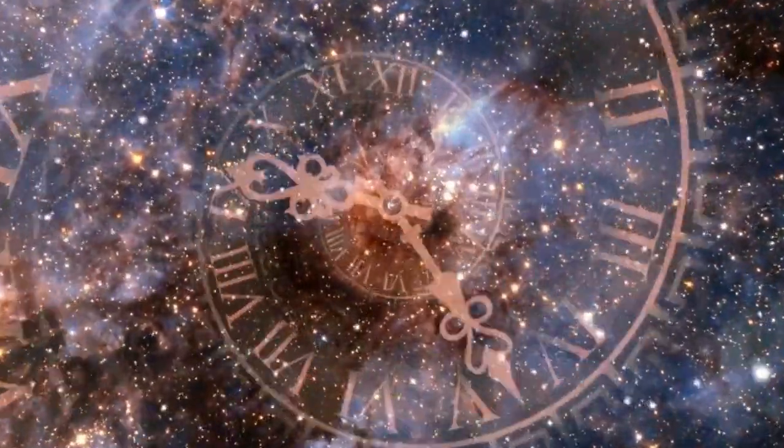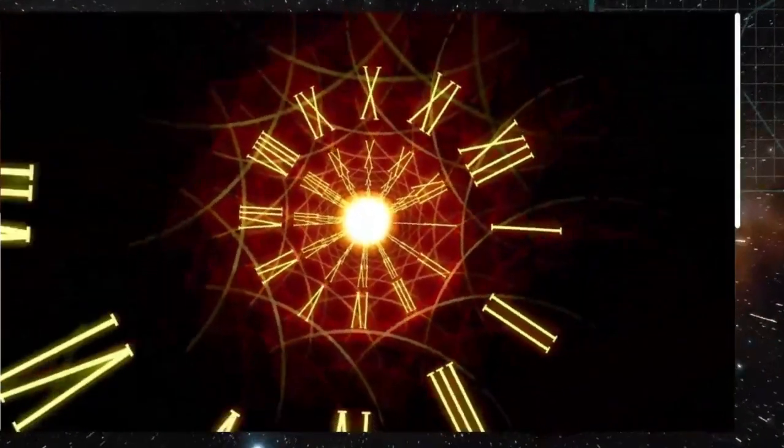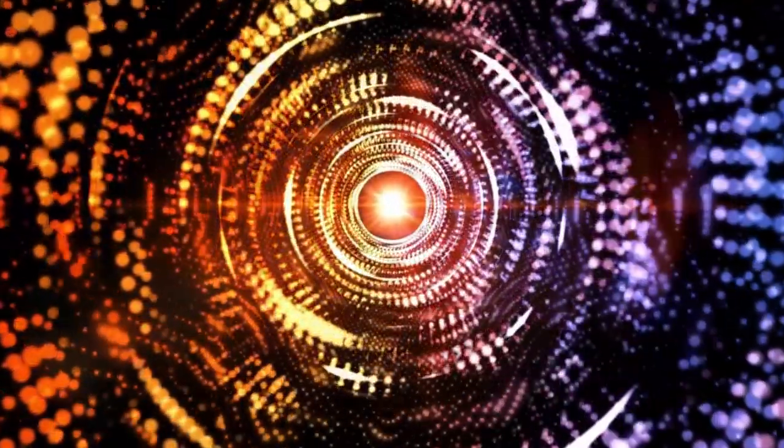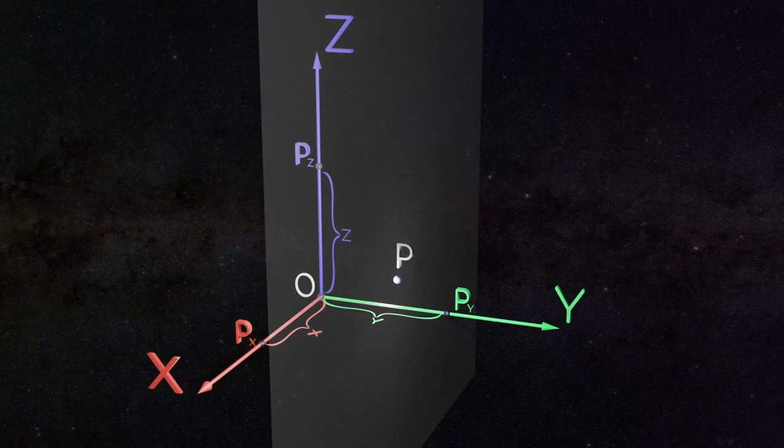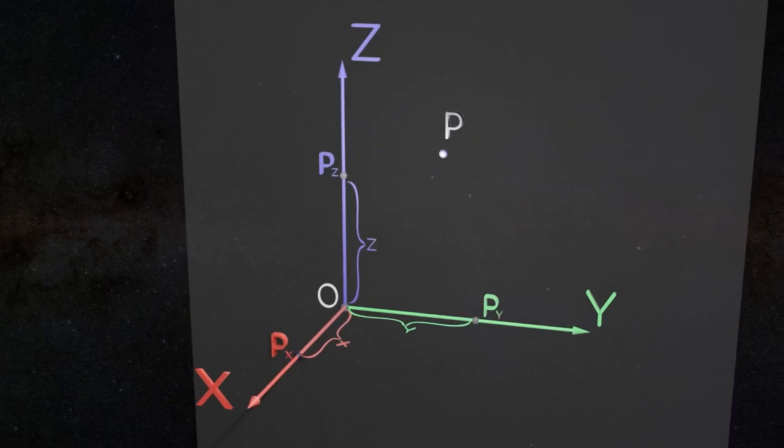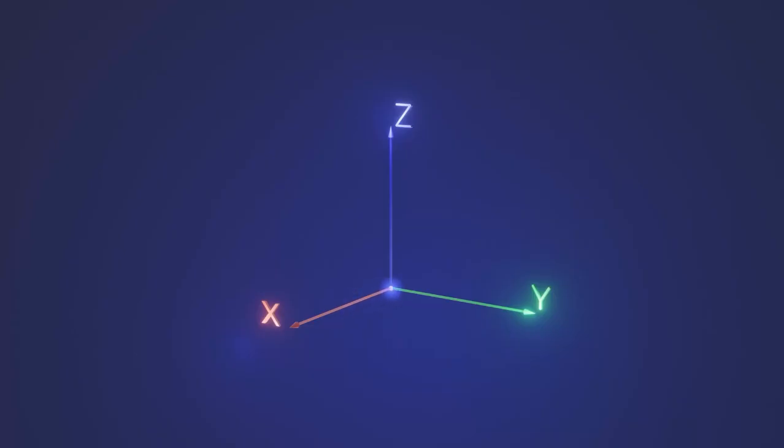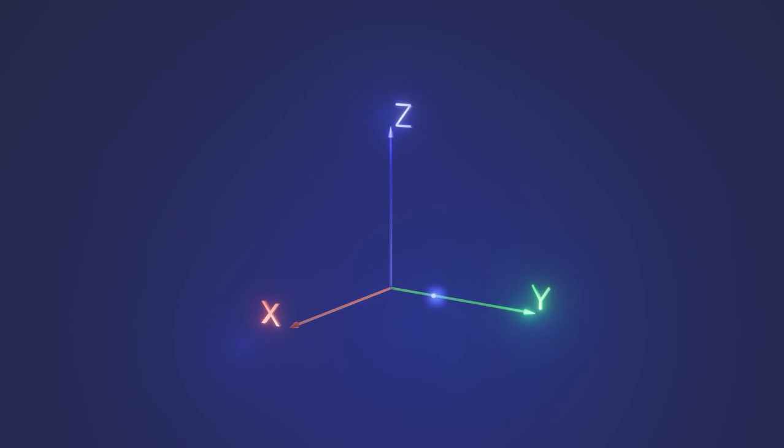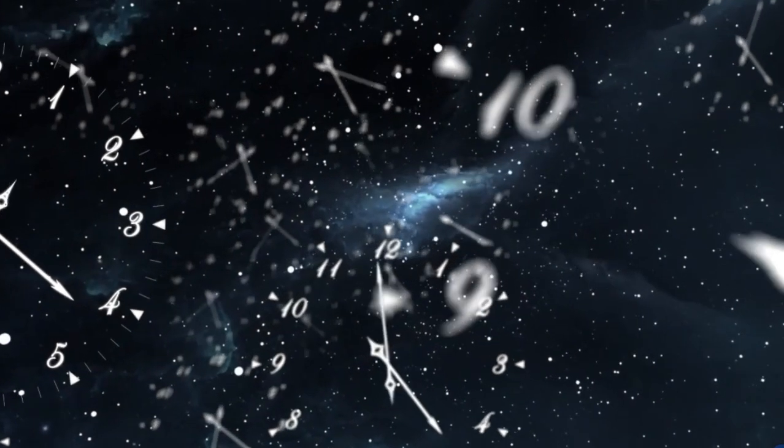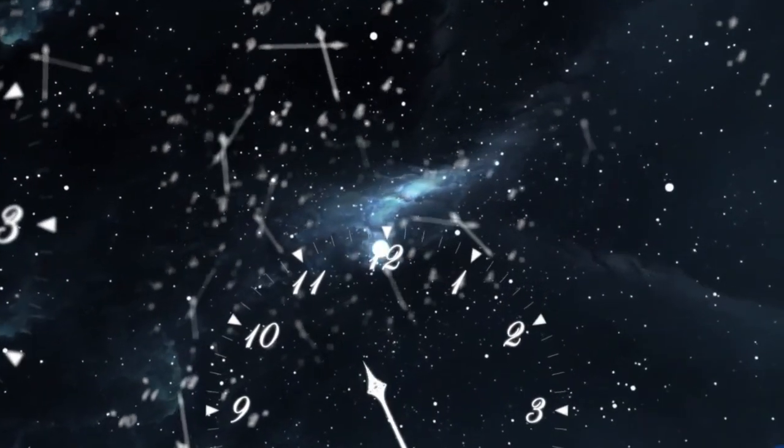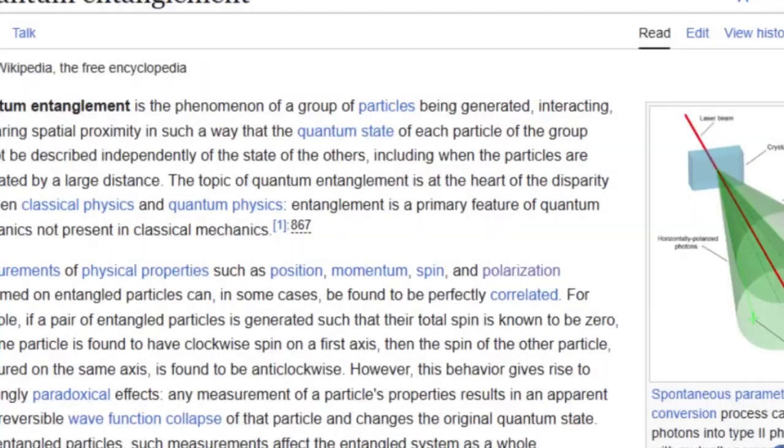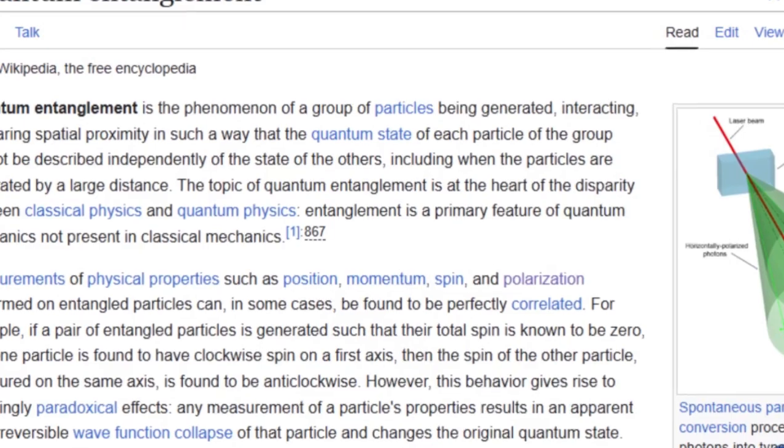One of the most intriguing phenomena in quantum mechanics is entanglement, where particles become so deeply connected that the state of one instantaneously influences the state of another, regardless of the distance separating them. This spooky action at a distance, as Einstein called it, has been experimentally confirmed and suggests that information can be correlated across vast expanses without any time delay. Such instantaneous connections challenge the classical notion of causality, which relies on a temporal sequence of cause and effect.